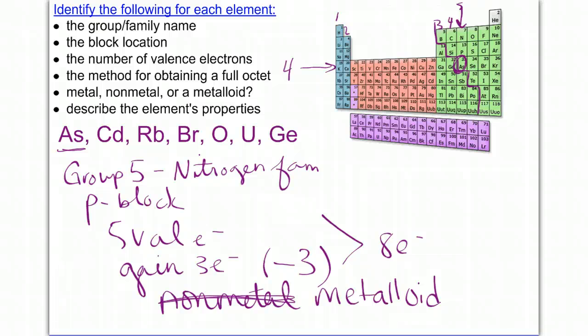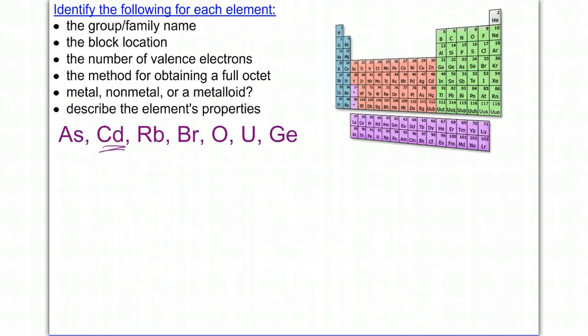Next is cadmium. That's going to be this one. Cadmium is located here. Its group or family name, it's in the transition metals. It's in the D block. Its number of valence is not going to be applicable because it has varying valence. Therefore, its method for obtaining a full octet is not something that we're going to worry about. You only do that with groups one through eight, the main group elements.